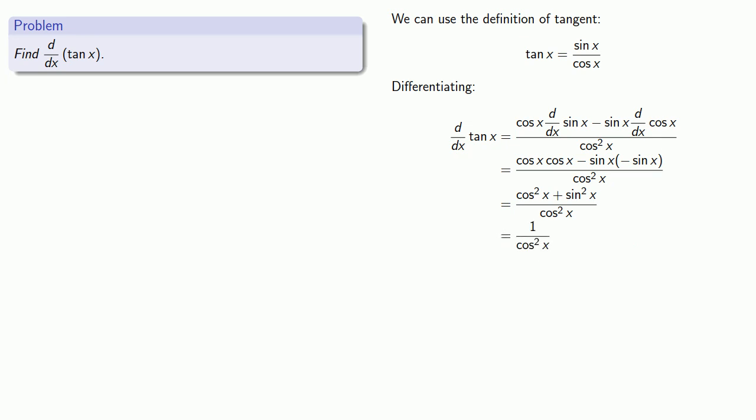But we can do a little bit more trigonometry. Since 1 over cosine is secant, then our derivative can be written as secant squared x. And we'll go ahead and record our process. We started with the definition of tangent as sine over cosine, then we applied the quotient rule, a little bit of algebra, and a little bit of trigonometry to get the derivative of tangent equal to secant squared.